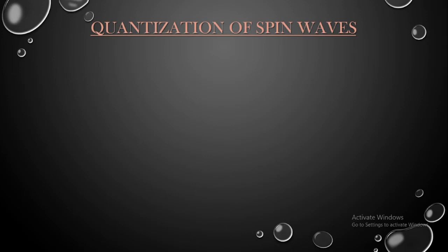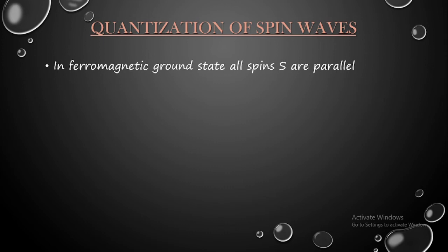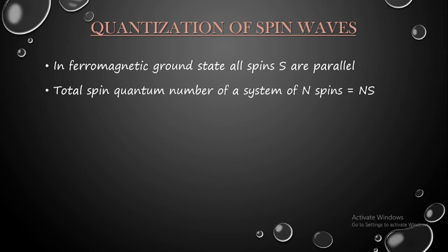Let us find out the quantitative relation for quantization of spin waves. If we consider a ferromagnetic ground state, all the spins are parallel to each other — they are not excited to higher levels — which means we observe the ordered state. Therefore, the total spin quantum number of a system of N spins, each having magnitude s, is equal to Ns in the ground state.